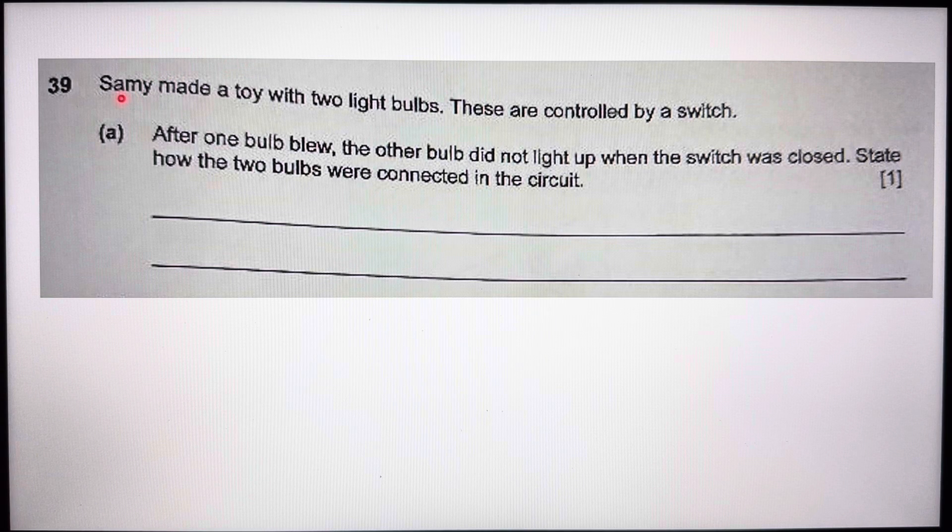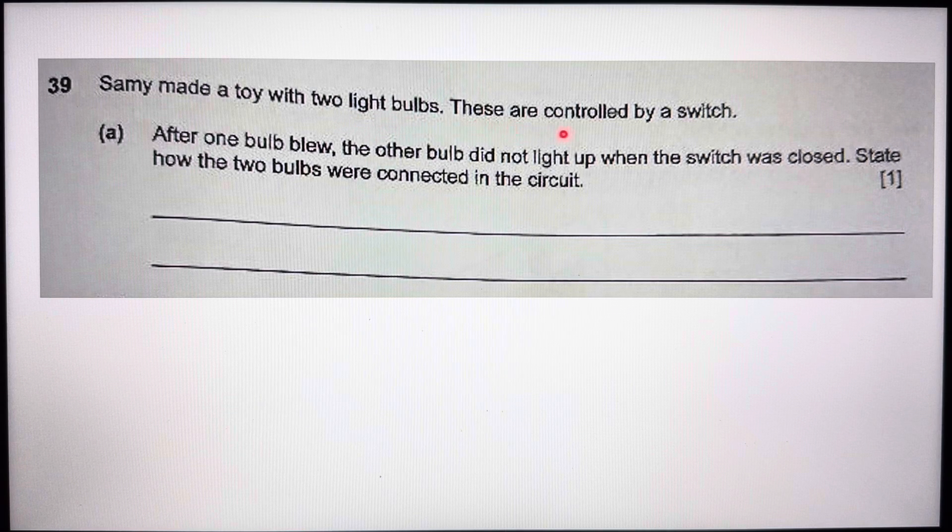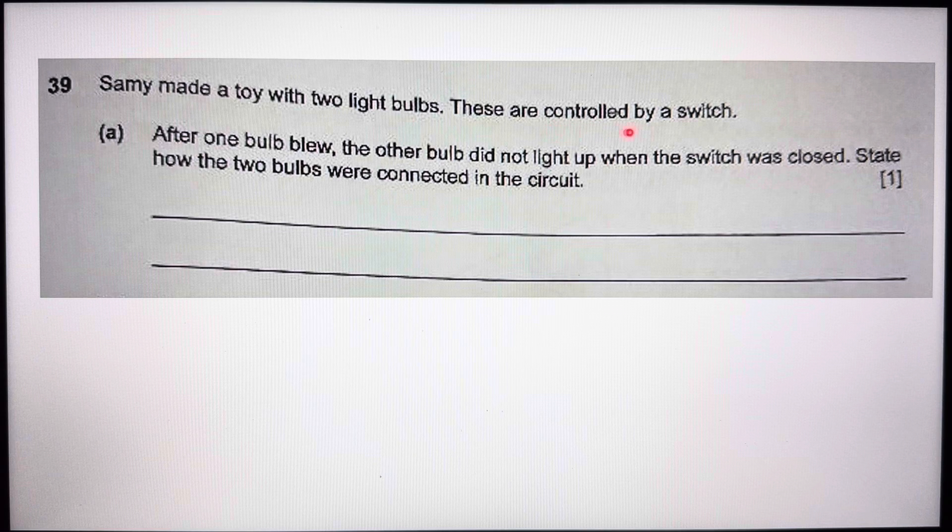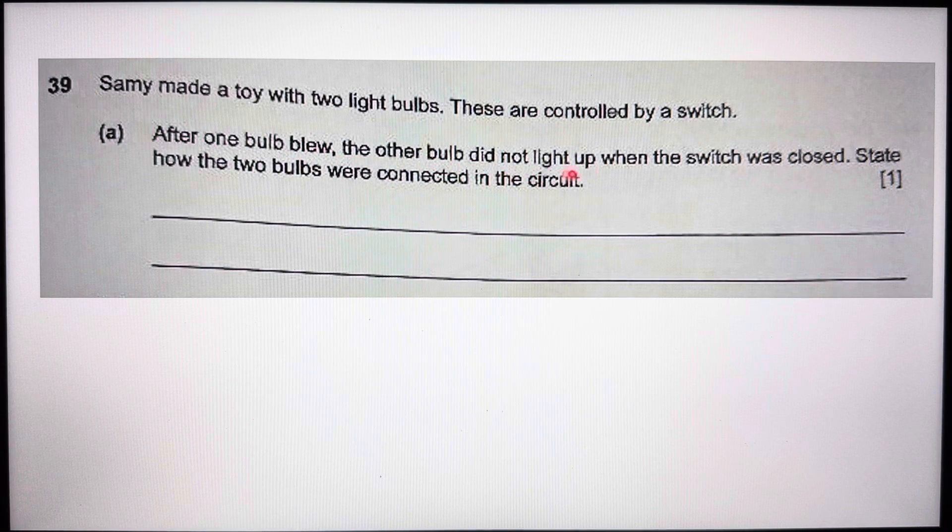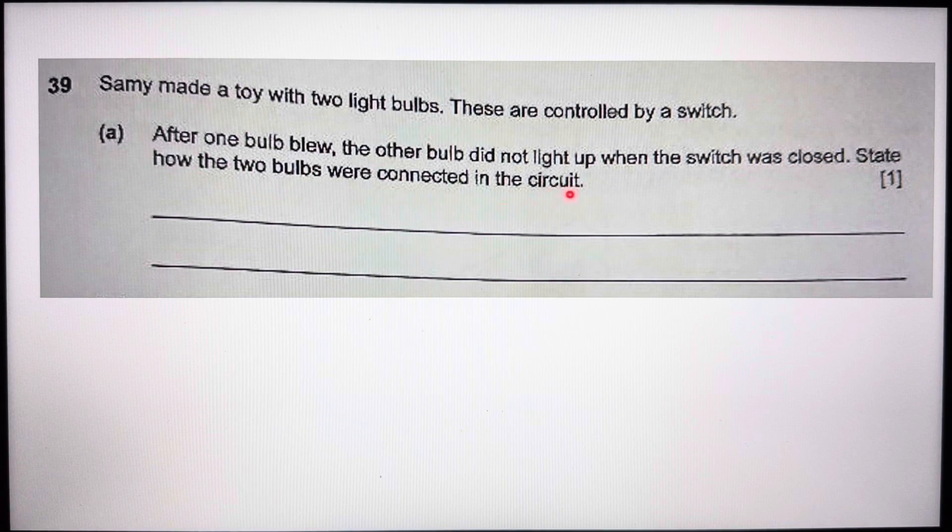Now for part A, let me read the question first. Sammy made a toy with two light bulbs. This circuit is controlled by a switch. After one bulb blew, the other bulb did not light up when the switch was closed. State how the two bulbs were connected in the circuit.